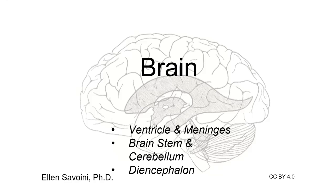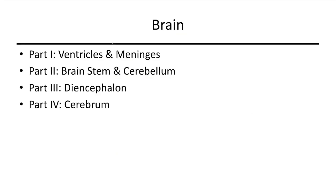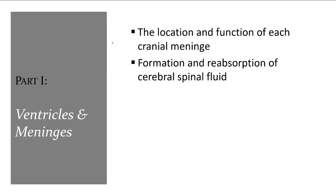The brain. There are four parts that we will go through for the brain, starting with the spaces inside the ventricles and the protective layers, meninges. For the ventricles and meninges, these are the main topics you'll need to know.